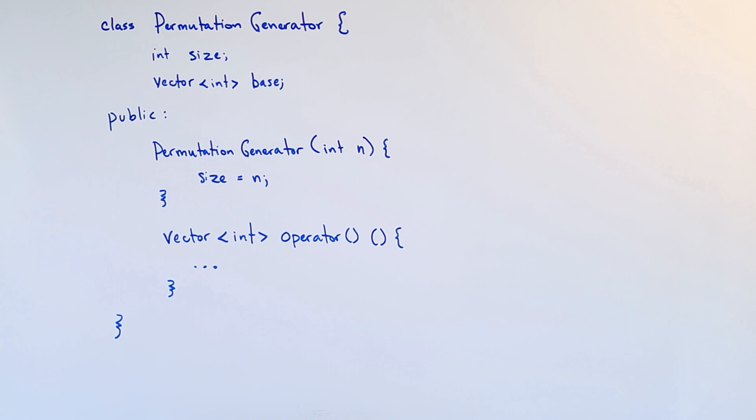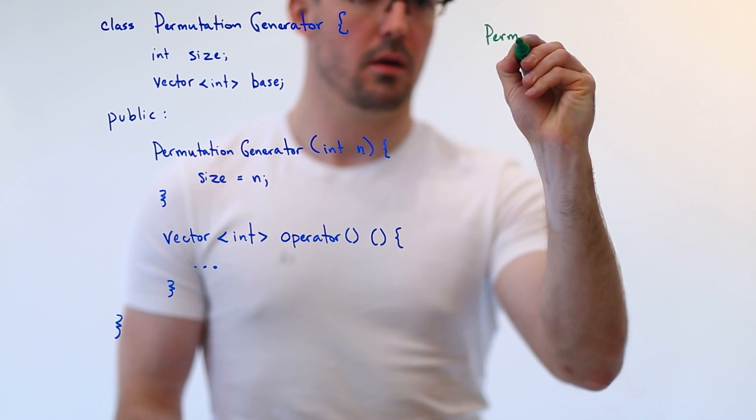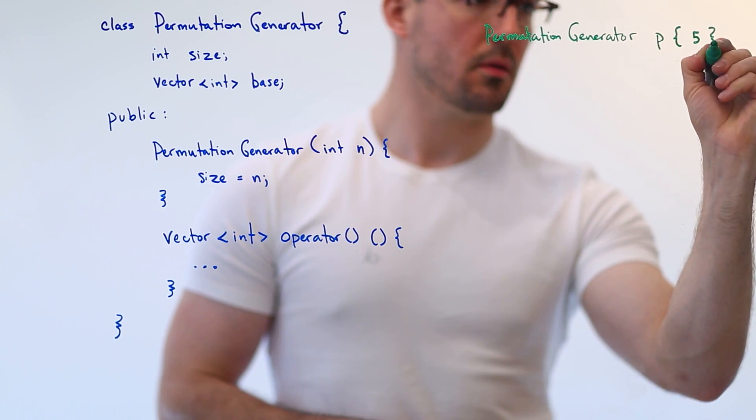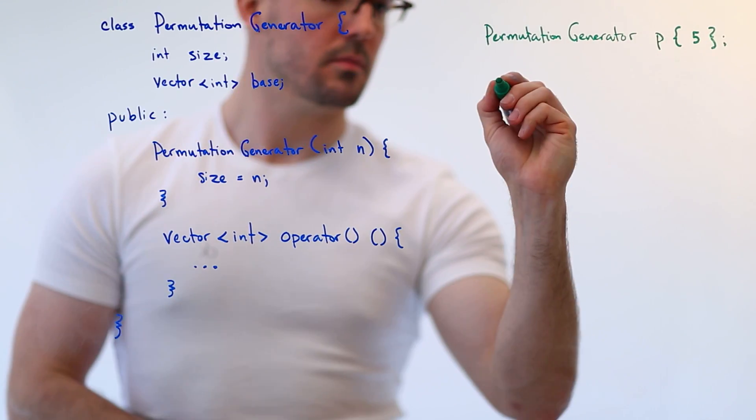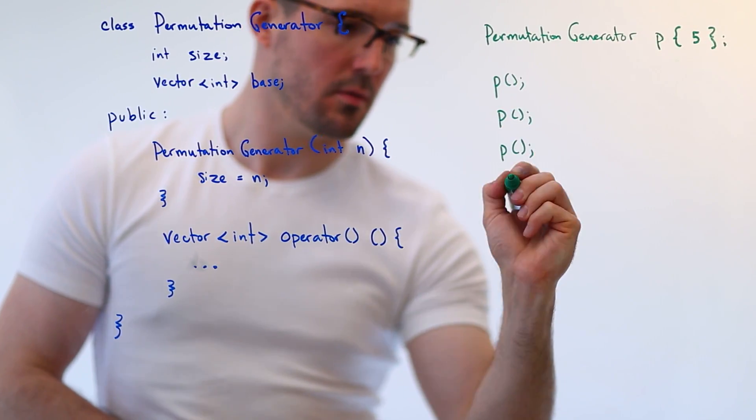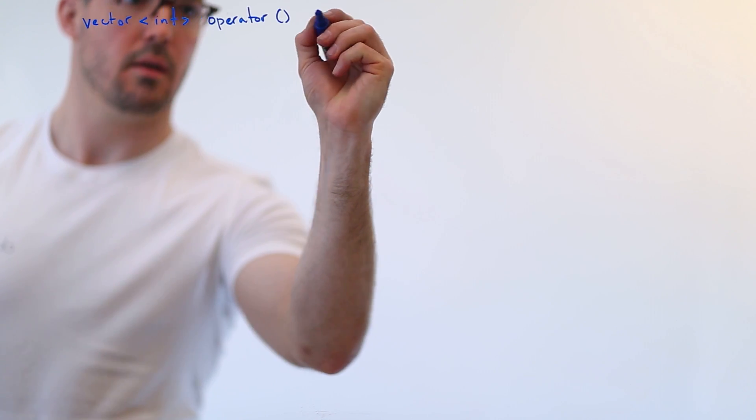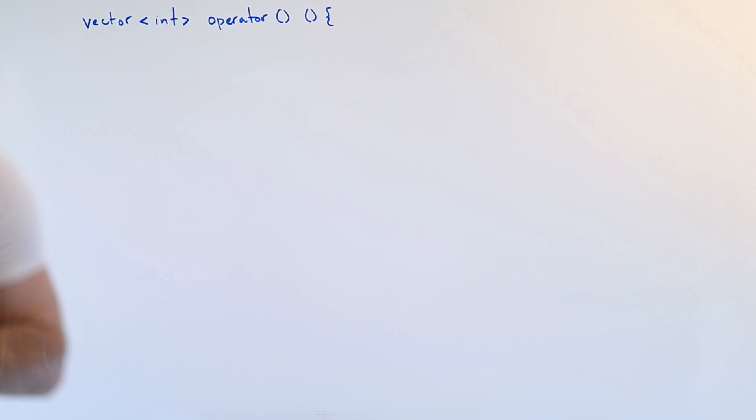So the only thing we need from here is the function execution operator to be implemented. And in our case, it's going to return a vector of integers. So that is the very healthy skeleton of the code. And what this will allow us to do is to create a permutation generator, and then call it whatever we need to. So now let's zoom in on this function execution operator. Okay, so imagine we're inside the class, we're inside of permutation generator, and we're implementing the contents of the operator for function execution.